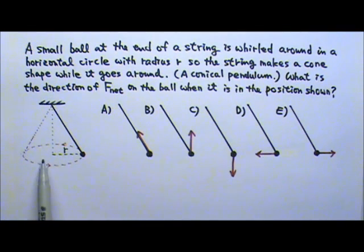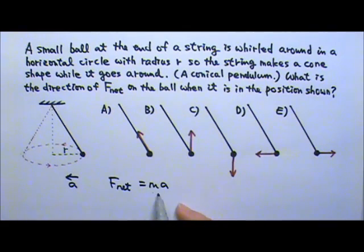Since the ball is doing circular motion in a horizontal circle, the acceleration goes towards the center. And since the net force equals ma, the mass is always a positive number.